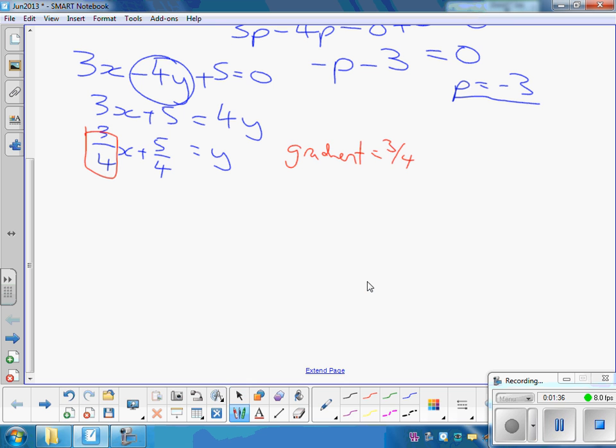So the perpendicular to this one here would be minus 1 over 3 quarters, which is minus 4 over 3. We're looking for a gradient of minus 4 over 3.